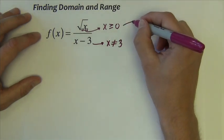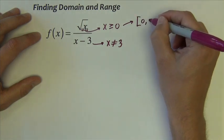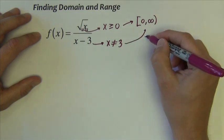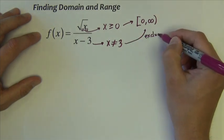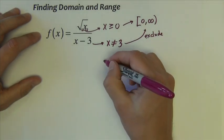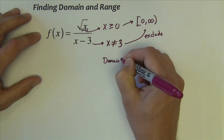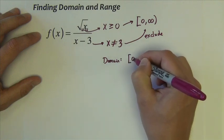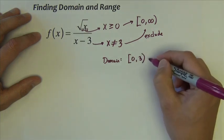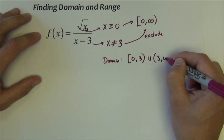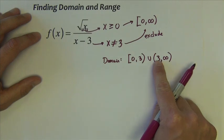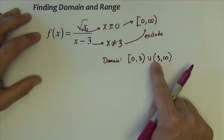So this, in interval notation would be zero comma infinity. But we have to exclude the three. This includes the three. So I would write my domain this way: I would say that it is zero to three, the rounded bracket means that we're not going to include it, and three to infinity. So now we're going zero to infinity, but we are breaking at three and we're not including three.